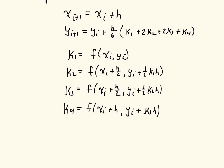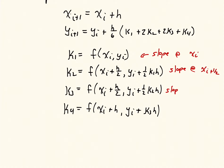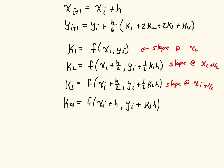Finally, k4 is equal to f at x-i plus h and y-i plus k3 times h. So what are these k's? k1 is the slope at x-i, the slope at the left side of the interval. k2 is the slope at x-i plus one-half, so halfway through the interval. k3 is another slope evaluated at x-i plus one-half, another slope at the center of the interval. And k4 is the slope at x-i plus 1, which is the slope at the end of the interval.